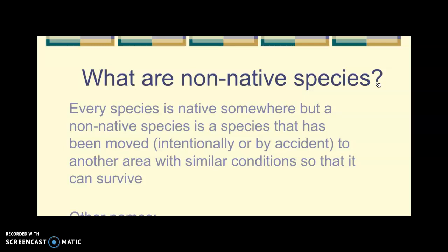For example, if we took piranhas and put them in lakes around here, they would not survive because they could not handle our winters — the water temperature would get too cold. So we wouldn't worry about piranhas taking over Lake Opica because the conditions wouldn't be similar. But species native to places like China that have similar conditions could become a problem. Other names for non-native species are invasive, exotic, introduced, and alien.